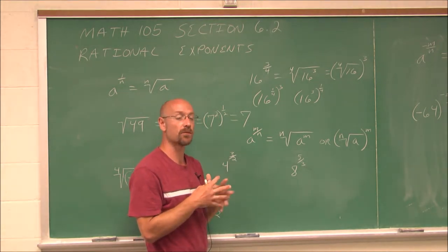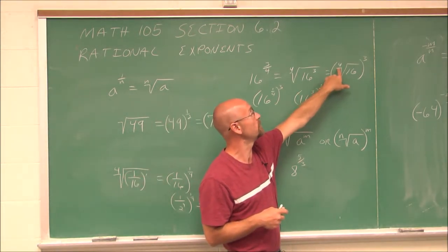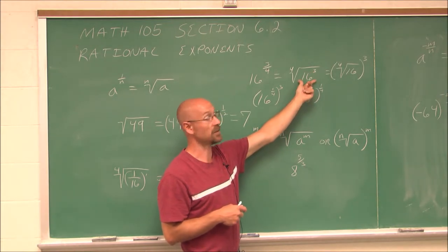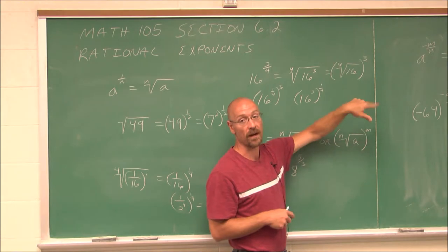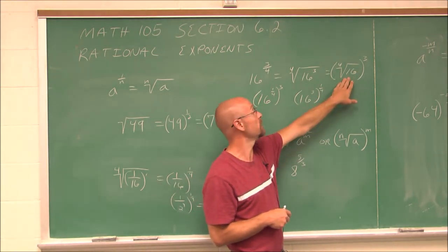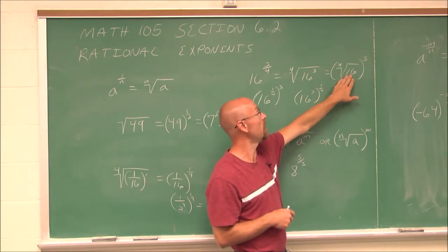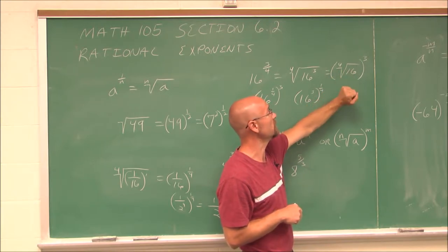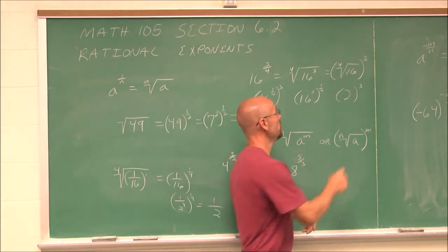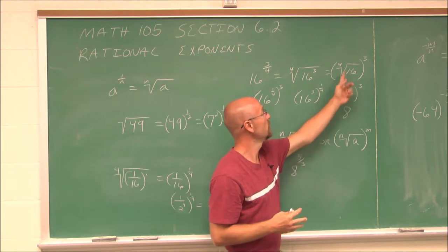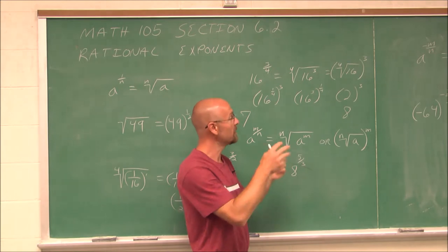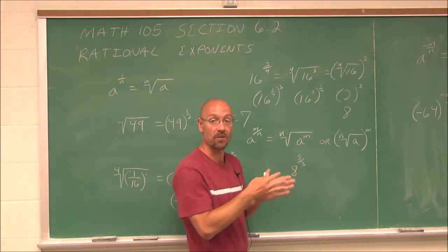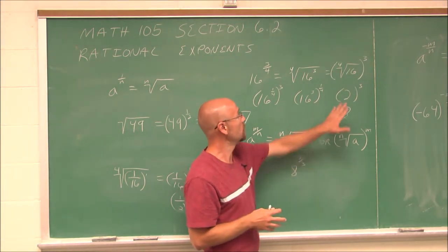What we have to assess is what's going to be easier to work through. I think taking the radical first — using the index first — is easier, because the 4th root of 16 is simpler than the 4th root of 16 cubed, since 16 cubed is a huge number. So I prefer this method: simplify 16 as 2 to the 4th, so the 4th root of 16 is 2, and 2 cubed is 8.